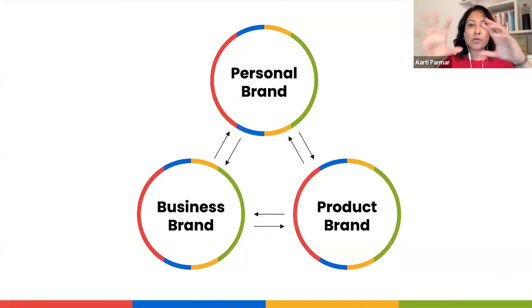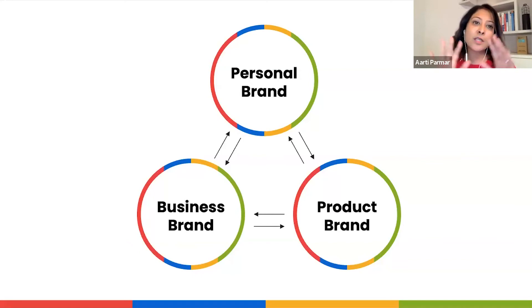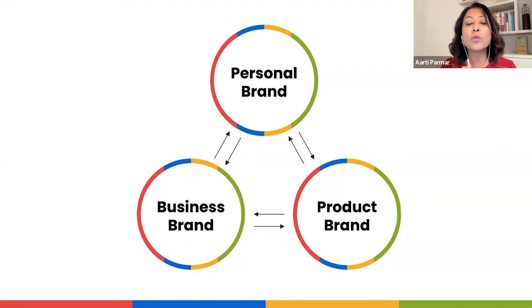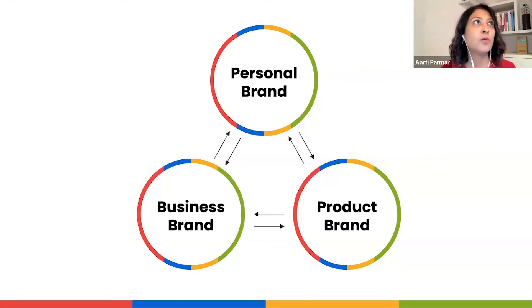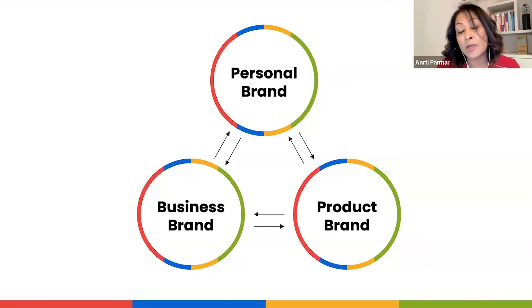Once you have those brand fundamentals clear, you can weave that information into how you show up in your personal brand, business brand, and product brand. These things do not stand alone — they are all interconnected and lend themselves to each other. Someone might meet you at a networking event, like you, and then go check out your business brand and website, or come across a product on Instagram and want to find out more.